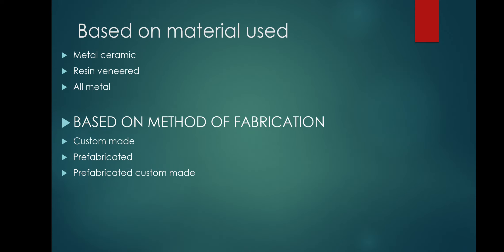Based on materials used, pontics are classified as metal-ceramic, resin veneer, and all-metal. Metal-ceramic pontics have the advantages of being aesthetic and biocompatible, but are difficult to fabricate. They are contraindicated in long-span bridges but are most commonly used in other situations.